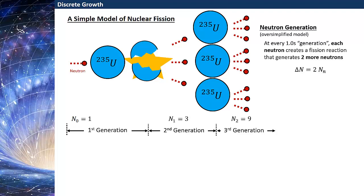So the change in the number of neutrons is two times the number of neutrons that you had. The change in neutrons delta N can be written as the number of neutrons at the (n+1)th generation minus the number of neutrons at the nth generation. Solving for the number of neutrons at the (n+1)th generation, that's equal to three times the number of neutrons in the nth generation.